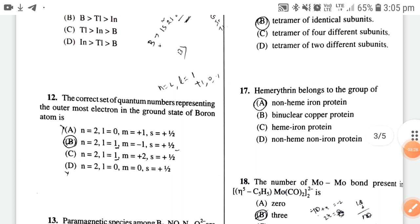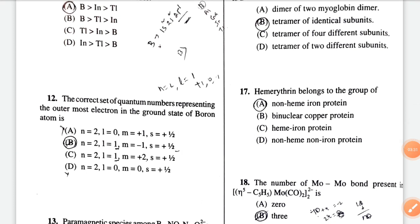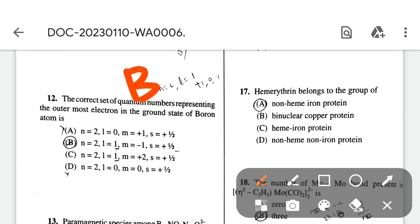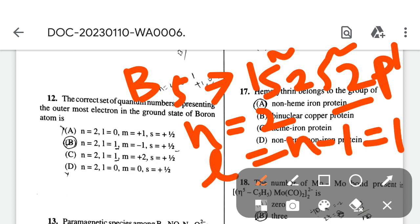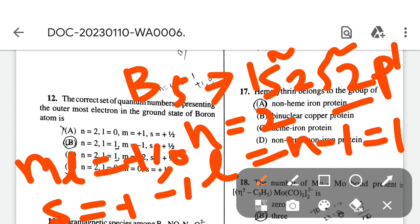The correct set of quantum numbers presenting the outermost electron in the ground state of boron atom: in boron atom, the electronic configuration is 1s² 2s² 2p¹. The principal quantum number n equals 2, l equals n minus 1, that is 1. The ml value is +1, 0, or -1, and spin is ±½. If we match, option B is correct.